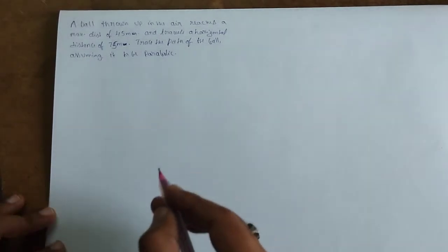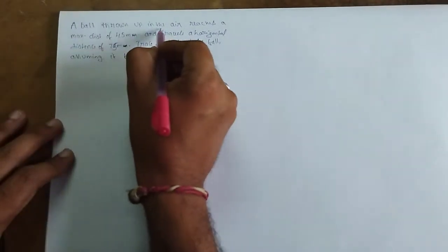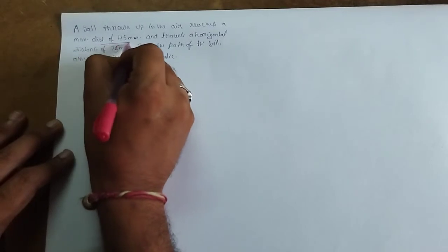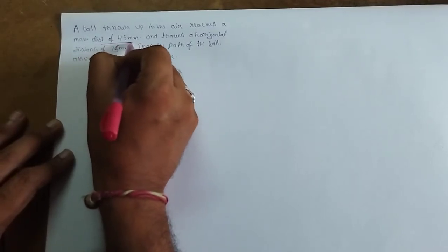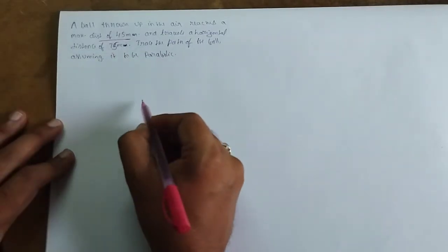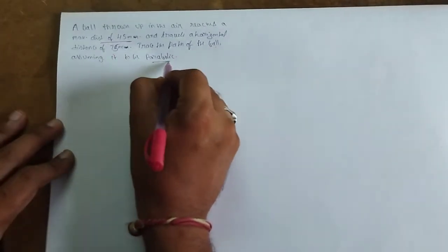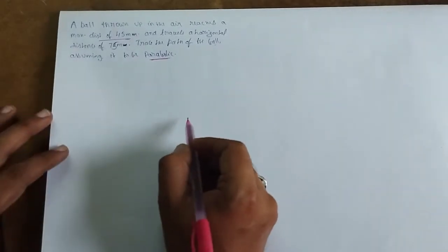Now let's solve an exercise problem. A ball thrown up in the air reaches a maximum distance of 45 meters and it travels a horizontal distance of 75 meters. Trace the path of the ball assuming it to be parabolic.